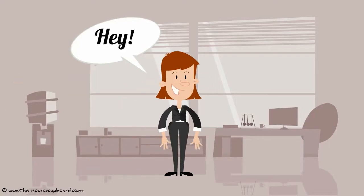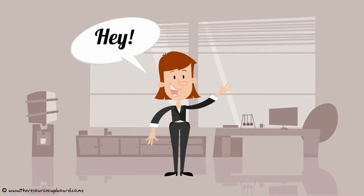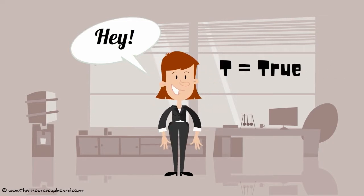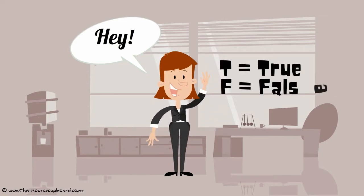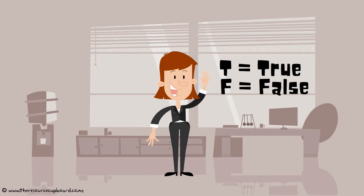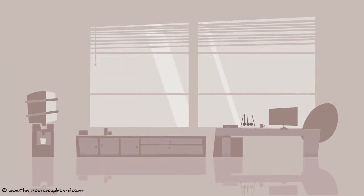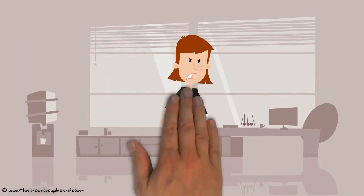Kia ora, welcome to your very own true-false speed challenge. The rules are simple. Write T for true, write F for false. Test your buzzers, everyone. Are you ready? Here goes.